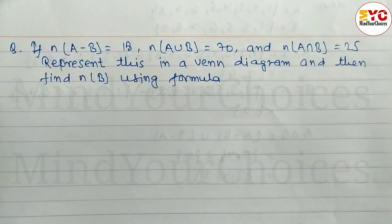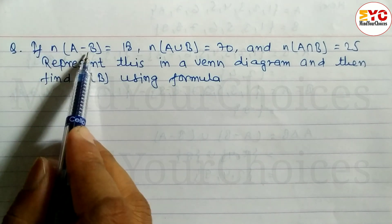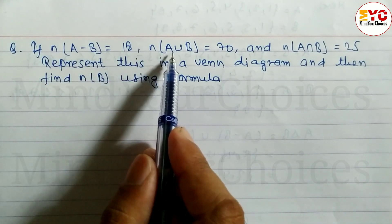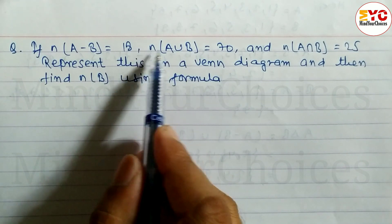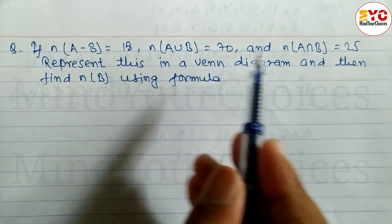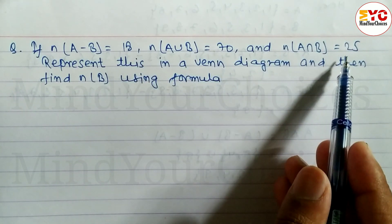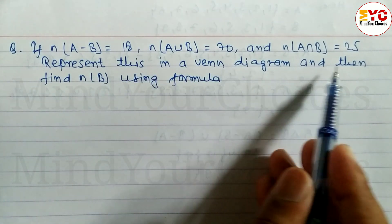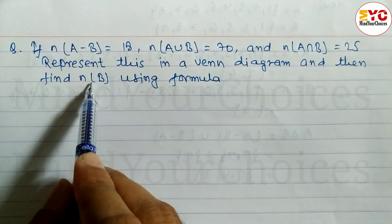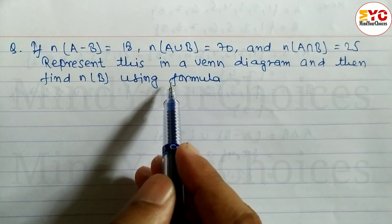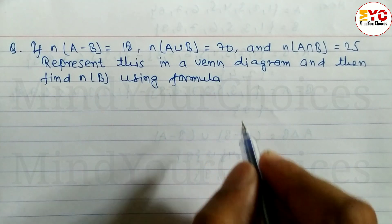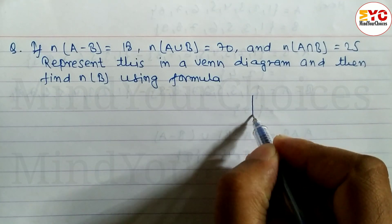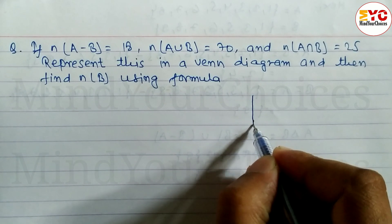Hope you understand that question. Now look at the next question. If n(A minus B) is equal to 18, cardinal number of A union B is equal to 70, and cardinal number of A intersection B is equal to 25, represent in a Venn diagram and then find n(B) using the formula. First we represent this in a Venn diagram, then we find out n(B).